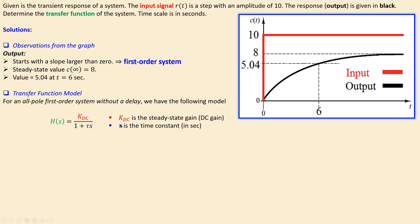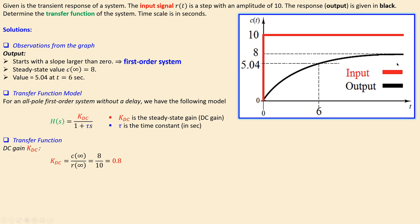So we have K_DC and also tau. Let's determine the DC gain first. K_DC is determined by this formula: K_DC equals the final value of the output divided by the final value of the input. The final value of the output is 8, the final value of the input is 10, so K_DC equals 8 over 10, which is 0.8. That is the gain.